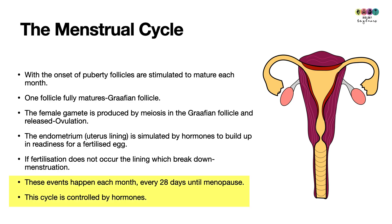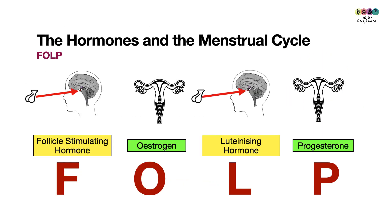This cycle is controlled by hormones, which is what this video mostly discusses. The menstrual cycle is under the influence of four particular hormones. It's important that you can list and discuss what each hormone does. A helpful mnemonic is FOLP — write it down — as it helps you remember both the hormones and the sequence in which they occur in the cycle.